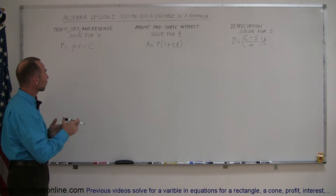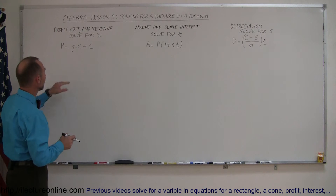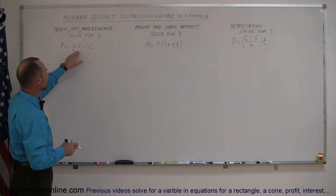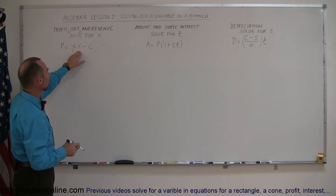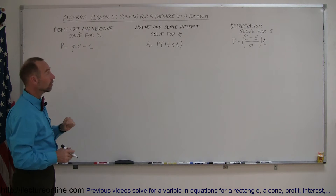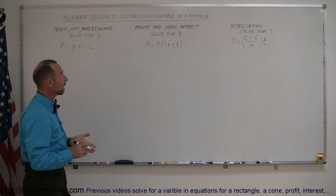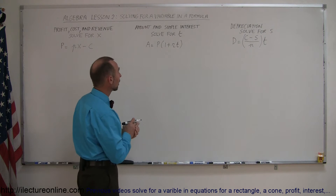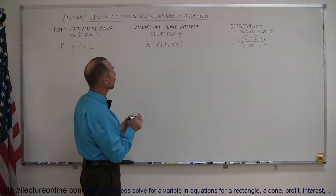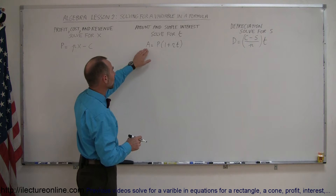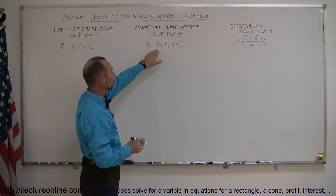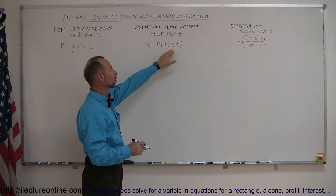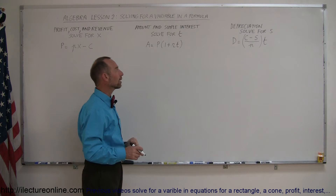One is the profit cost of revenue formula: the profit is equal to the price times the quantity sold, minus the cost. Here we have the amount of simple interest, where the amount is equal to the principal invested times one plus the rate times the time.